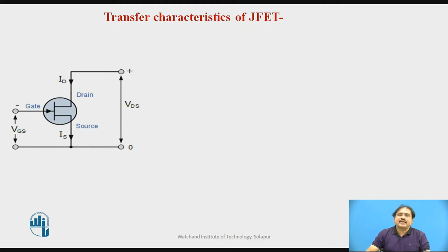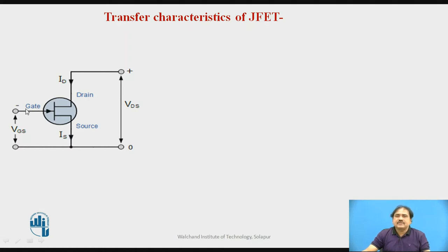This diagram shows us we are plotting a graph between the current flowing in the drain and the voltage applied from gate to source. In this graph plotting, we are going to make the gate-to-source junction reverse biased.